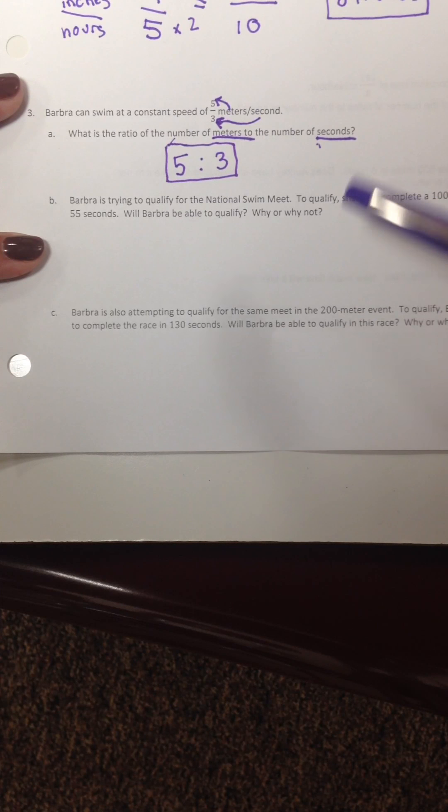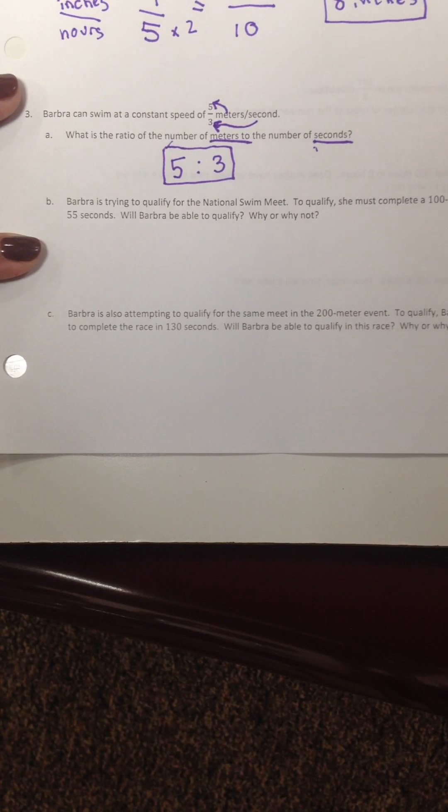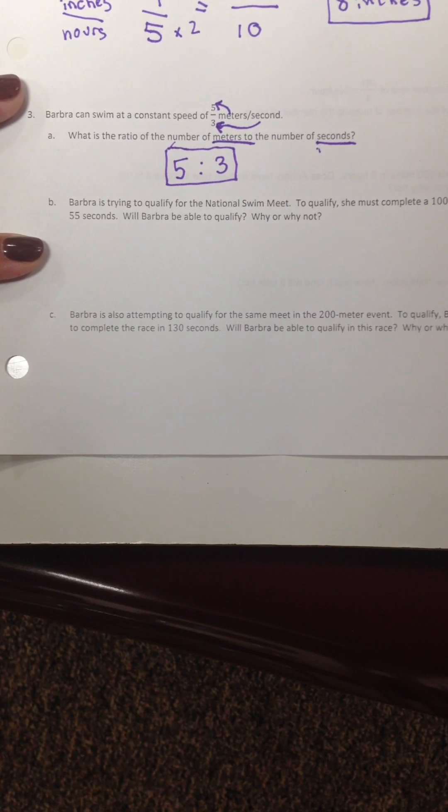So we could have taken 100 and divided it by 55 and seen what we came up with. And in the same way, 5 divided by 3 and see which one, if that was a faster speed than that. And if it wasn't, then she wouldn't qualify. But another way to think about it is we can look at equivalent ratios.